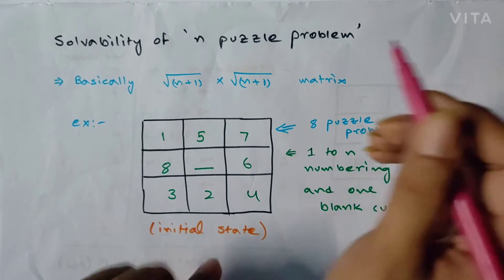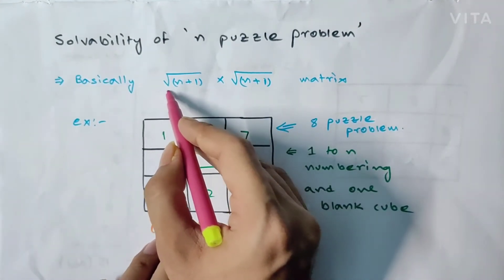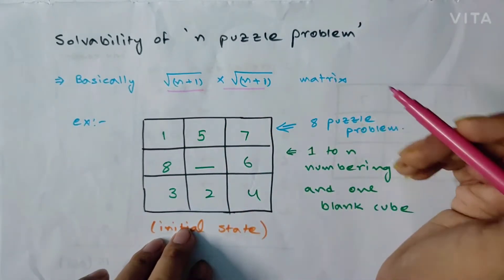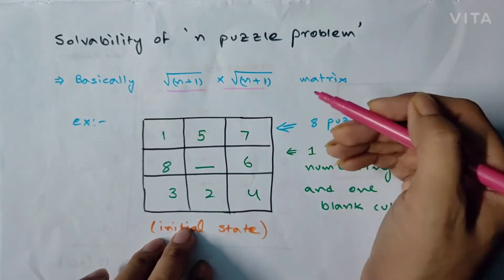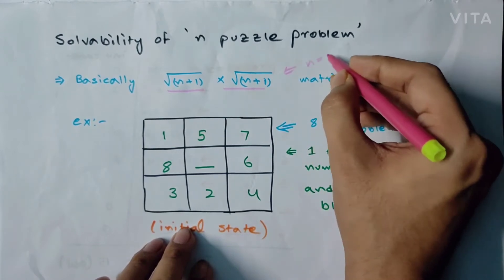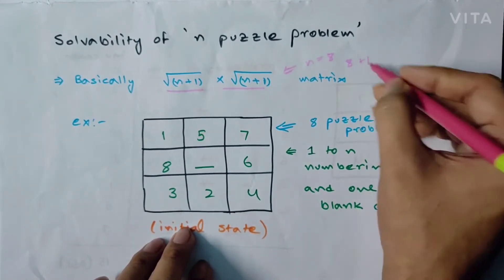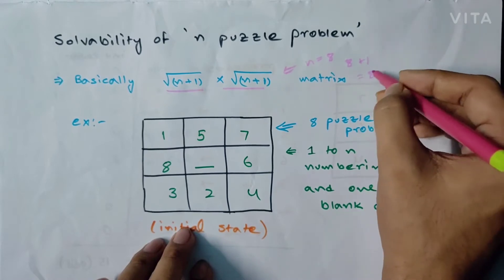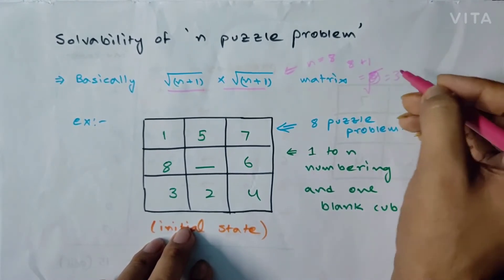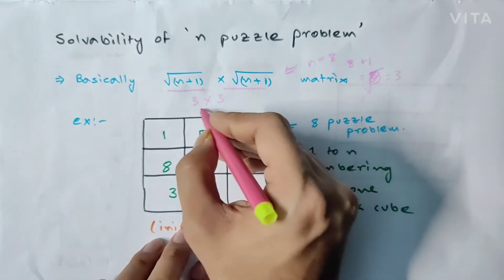In an N-puzzle problem, we will be given with a root of (N+1) cross root of (N+1) matrix. For example, if N equals 8, then N+1 equals 9, and the square root of 9 equals 3. Therefore, we will be given with a 3×3 matrix.